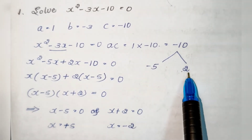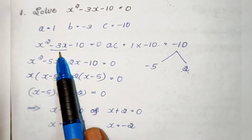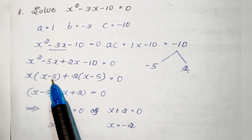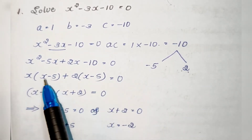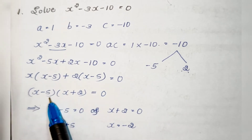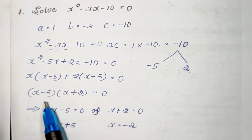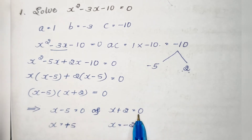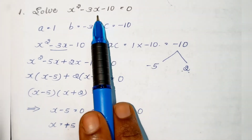We split −3x as −5x + 2x so that their sum equals −3 and product equals −10. Factoring gives x(x − 5) + 2(x − 5) = 0, so (x + 2)(x − 5) = 0. Therefore x − 5 = 0 and x + 2 = 0, giving x = 5 and x = −2. So 5 and −2 are the roots of this equation.